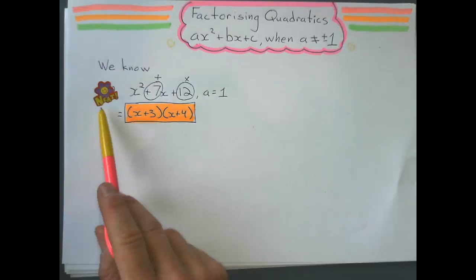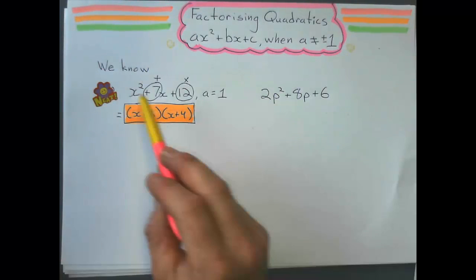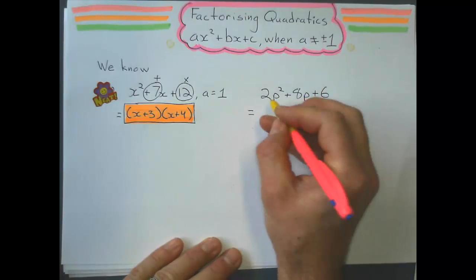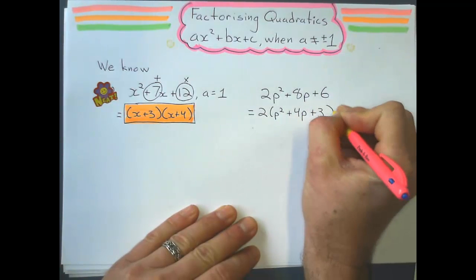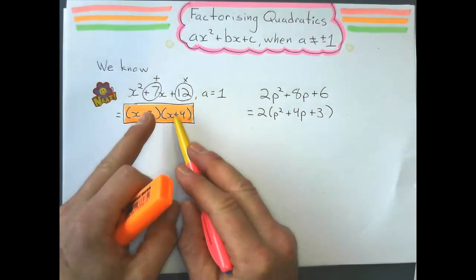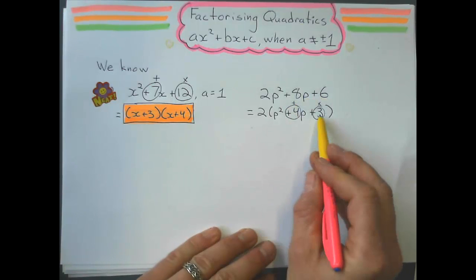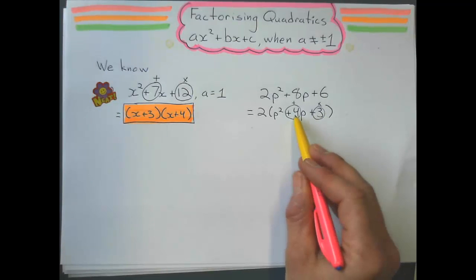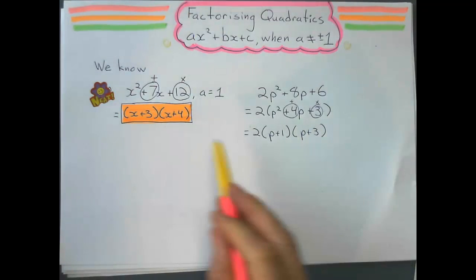We also know there may be a common factor hiding in all the terms that we can factorize out first. Like this one — even though the coefficient here is 2, not 1, there's still a common factor we can pull out and turn it into a simpler problem. So I factorize a 2 out of 2p squared plus 4p plus 3, and now I think of two numbers that multiply to get positive 3 and add to positive 4 — that's 3 and 1 — and rewrite it as p plus 1 times p plus 3. Those two methods we've done already.